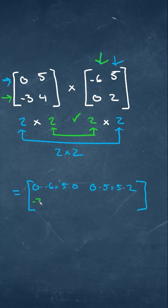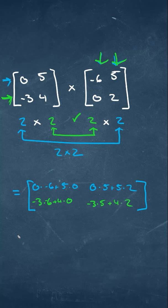Moving on to the second row for our output matrix, we'll have negative 3 times negative 6 plus 4 times 0. Then with the second column, we'll have negative 3 times 5 plus 4 times 2.